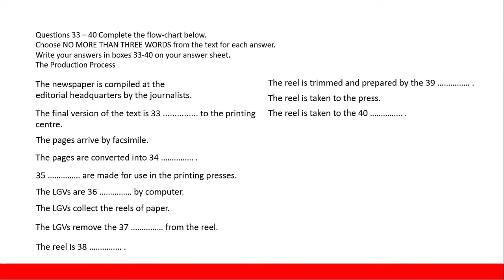Choose no more than three words — it's a sentence completion, and also a flowchart. It's the production process. You might have to find three words, two words, or one word. Do not give more than three words — the assessors will give you no score for that. You have to write only one, two, or three words, which is grammatically acceptable. Grammatically imperfect answers will not be counted.